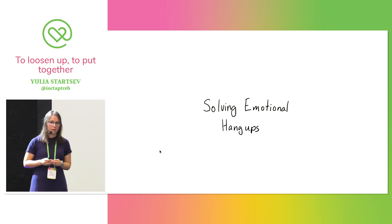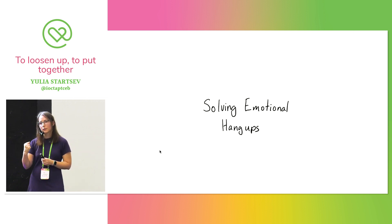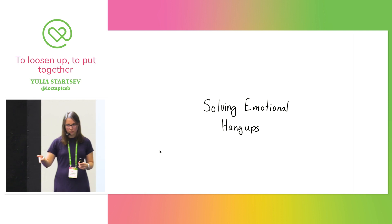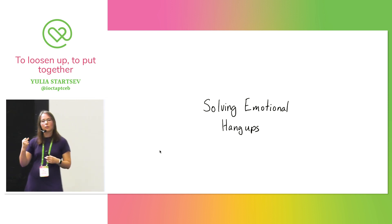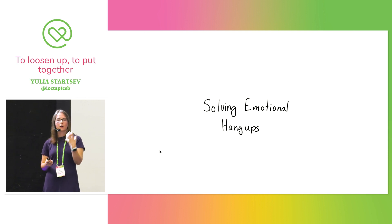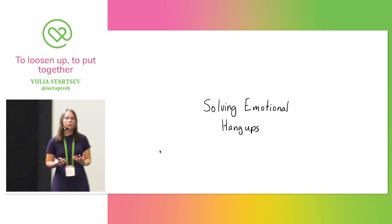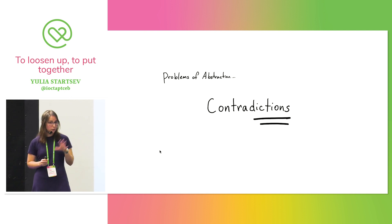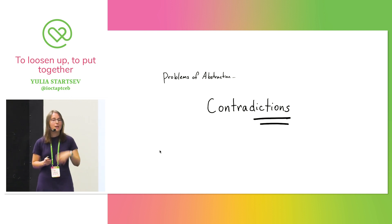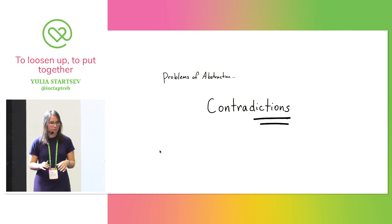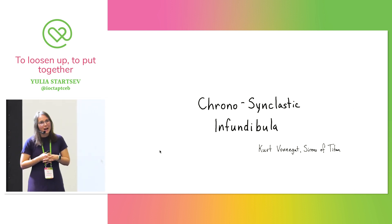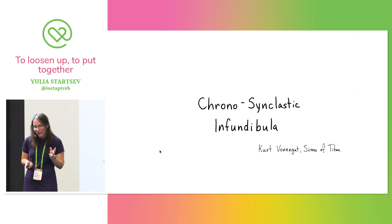Let's go back to that example about the phantom limb patients — they knew intellectually that the hand was gone, but seeing it back in the mirror allowed them to ungrip the hand. Our minds are not purely linguistic things. There's more going on — there are other types of thinking involved. So let's continue on with the problem of abstraction: what if your abstraction is wrong and you hit a contradiction? The first thing that's going to happen is you're going to be emotionally involved.